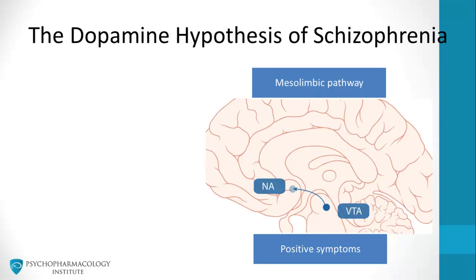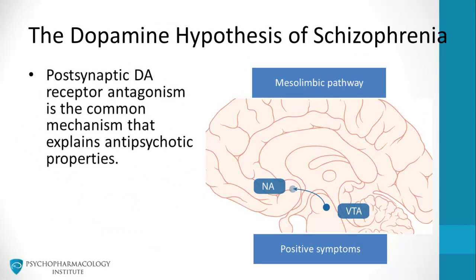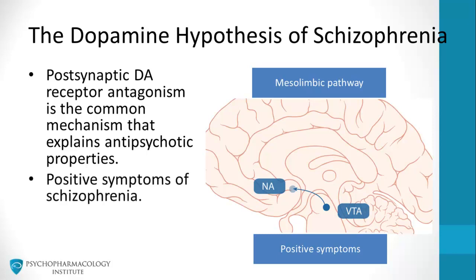The dopamine hypothesis of schizophrenia postulates that postsynaptic dopamine antagonism is a common mechanism that explains anti-psychotic properties. The pharmacologist and clinician Stephen Stahl argues that it would be more appropriate to refer to this as the dopamine hypothesis of positive symptoms of schizophrenia, since there are more pathways and psychopathological dimensions not included in this theory.